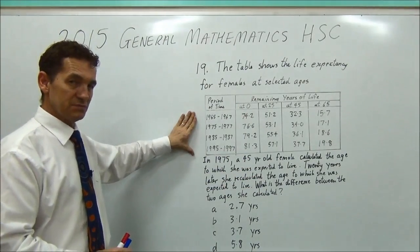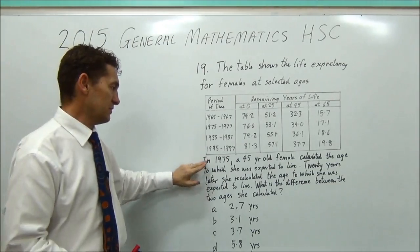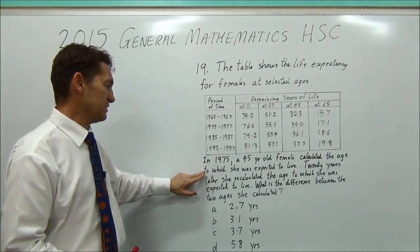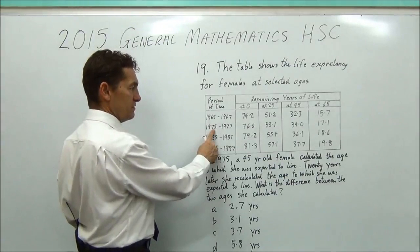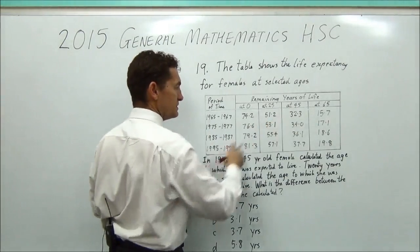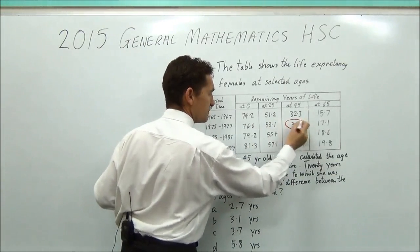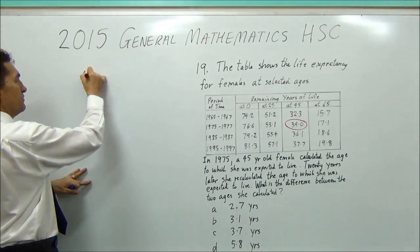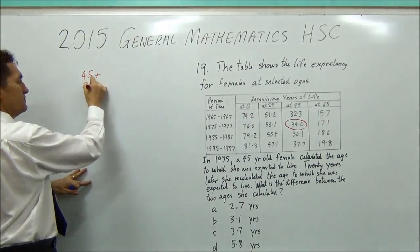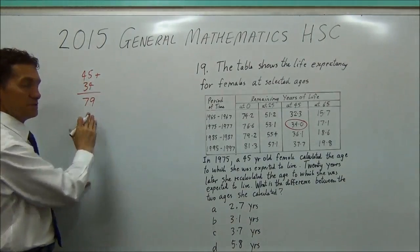So it's actually reasonably simple if you just read the question carefully. So we're looking, 1975, she calculates her age. So 1975, she's 45, she calculates her age. So she would be expected to live 34 more years. So you've got to add 45 plus 34 and get 79. So that's your first step.